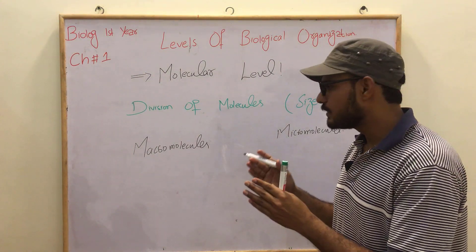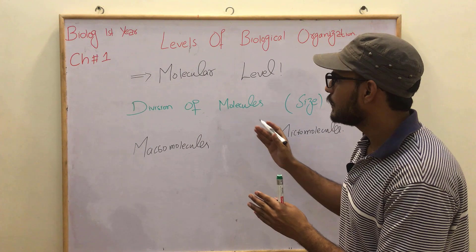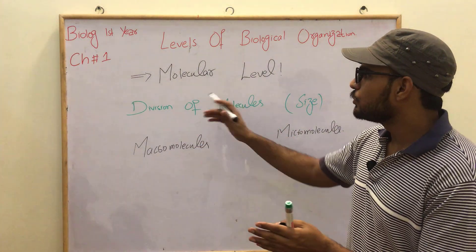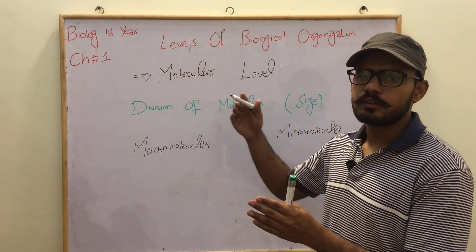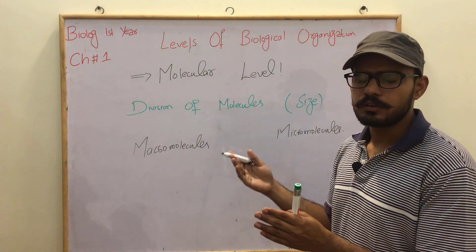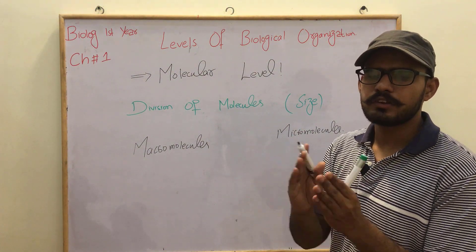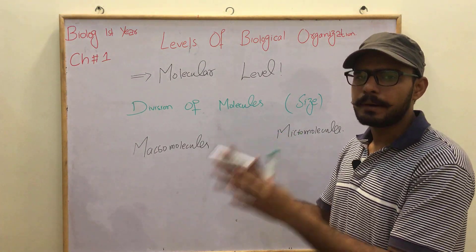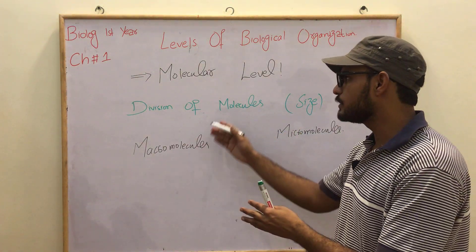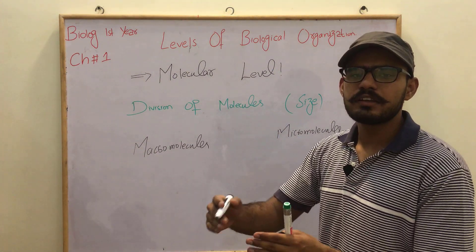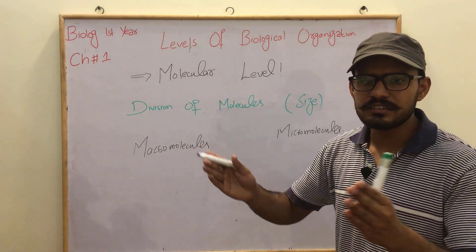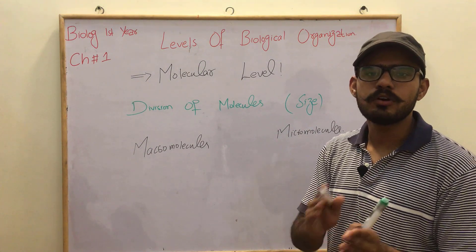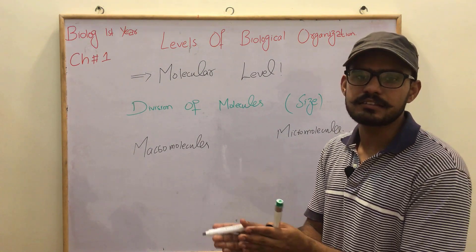Why do we divide the molecules? Because at the atomic level concept, we have seen that different molecules are combined with different elements. The elements are isolated in the body — they cannot remain isolated in their form. They have to combine with a different element to make molecules.